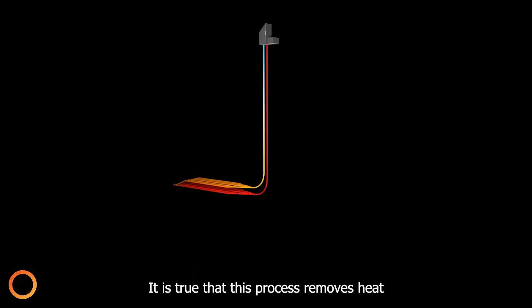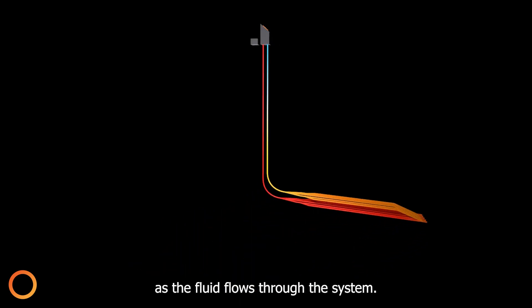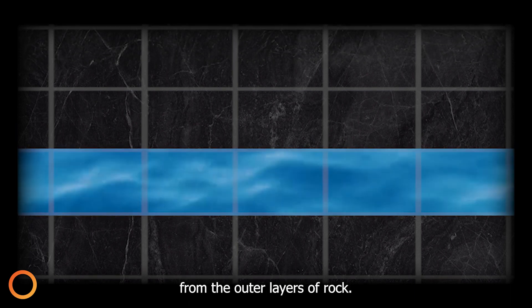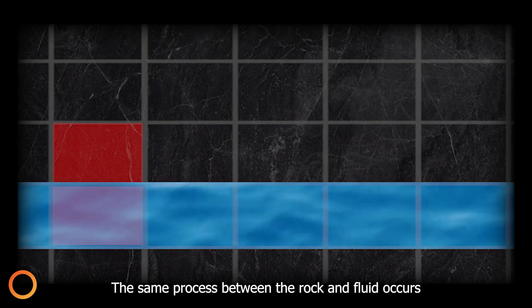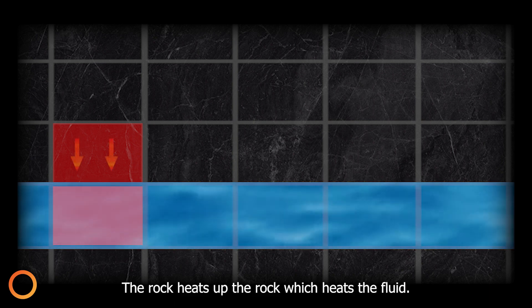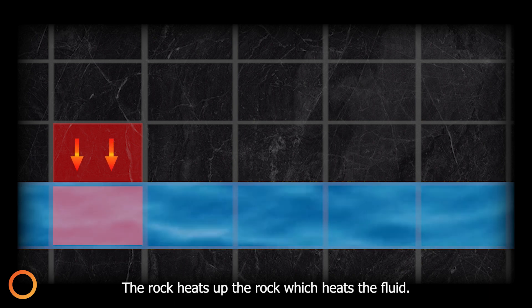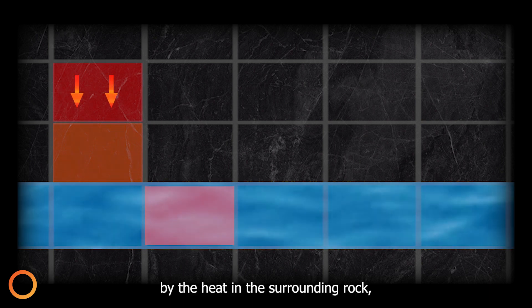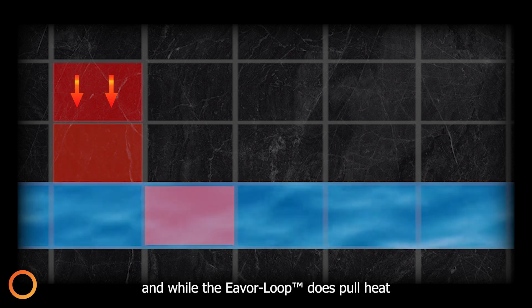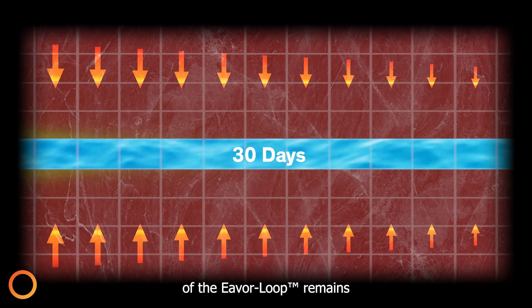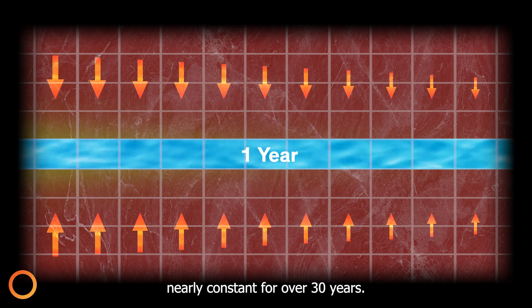It is true that this process removes heat from the surrounding rock as the fluid flows through the system. However, that heat is constantly replenished from the outer layers of rock. The same process between the rock and fluid occurs between the inner and outer layers of rock — the rock heats up the rock, which heats the fluid. Overall, the heat is constantly replenished by the heat in the surrounding rock. And while the Everloop does pull heat faster than it's replenished, the heat production rate of the Everloop remains nearly constant for over 30 years.